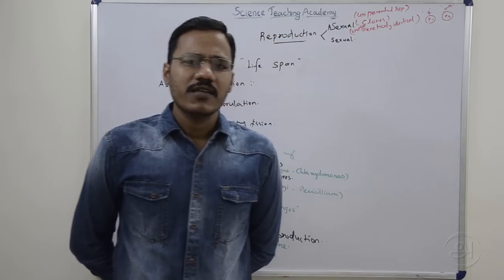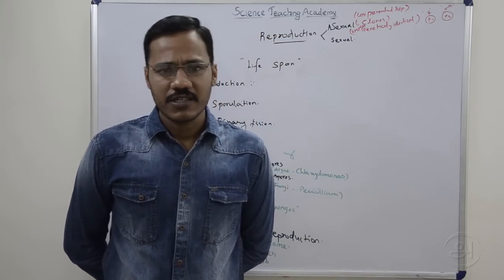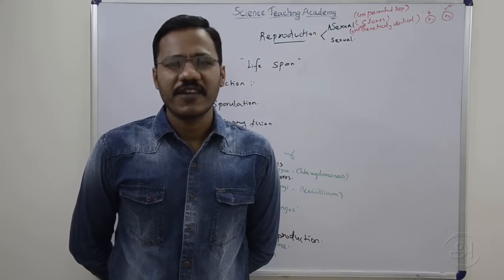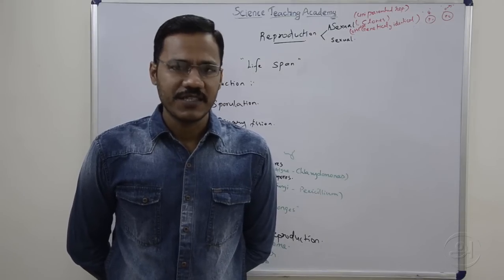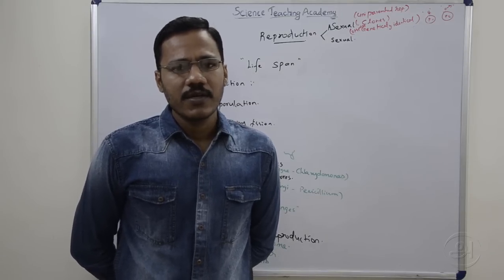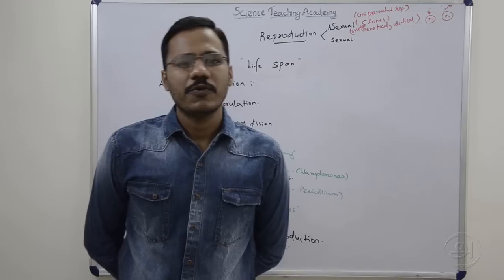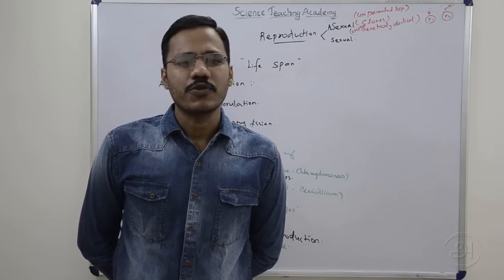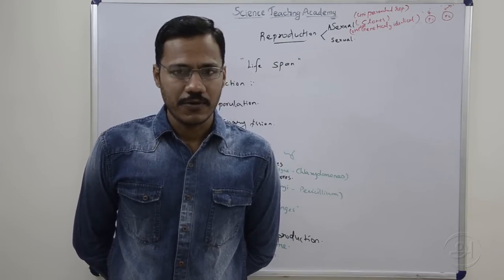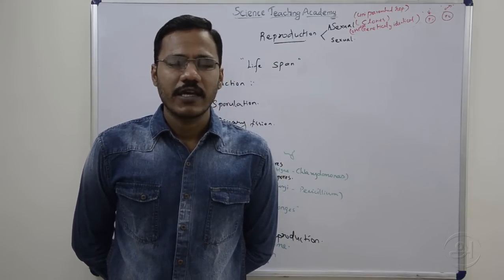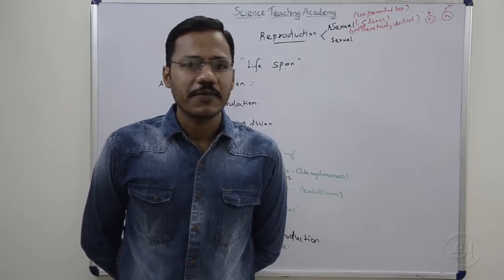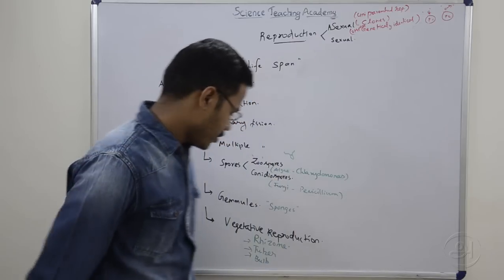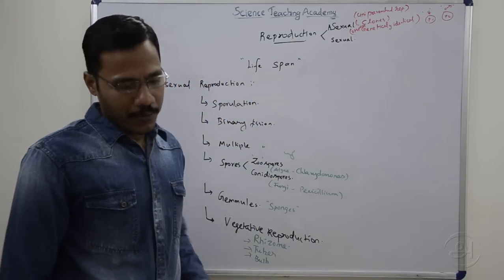This is a reproductive structure, and the leaf is a vegetative structure. If you use a vegetative structure, you can use it for vegetative reproduction. If you do a bulb, it should be a bulb.